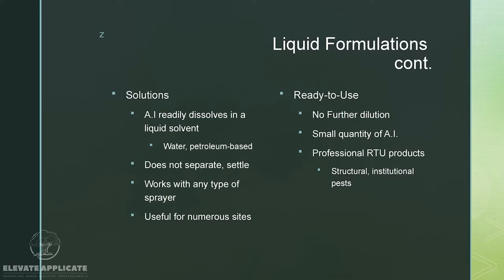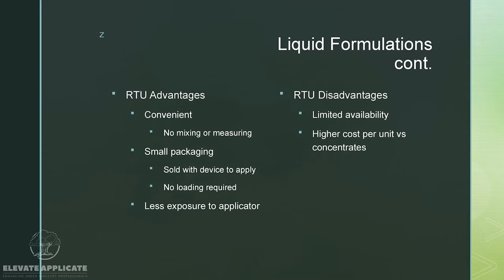Ready-to-use formulations require no further dilution — they contain a small quantity of active ingredient. Professional ready-to-use products are generally found in structural and institutional pest control. Examples include ant baits, rat baits. Advantages: convenient, no mixing or measuring required, generally small packages, some are sold with application devices, and overall less exposure to the applicator. Disadvantages: limited availability and more expensive per unit versus concentrates. Ready-to-use products are what you typically find at homeowner and big-box stores — things like ready-to-use Roundup, Triclopyr, 2,4-D, or Home Defense for perimeter treatments.